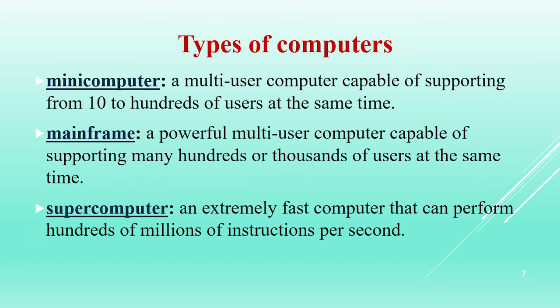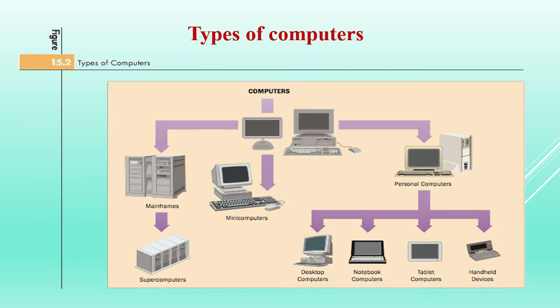Types of computers: first, personal computers and workstations. A personal computer is a small, single-user computer based on a microprocessor. In addition to the microprocessor, a personal computer has a keyboard for entering data, a monitor for displaying information, and a storage device for saving data. A workstation is also a single-user computer but has a more powerful microprocessor and a higher quality monitor.